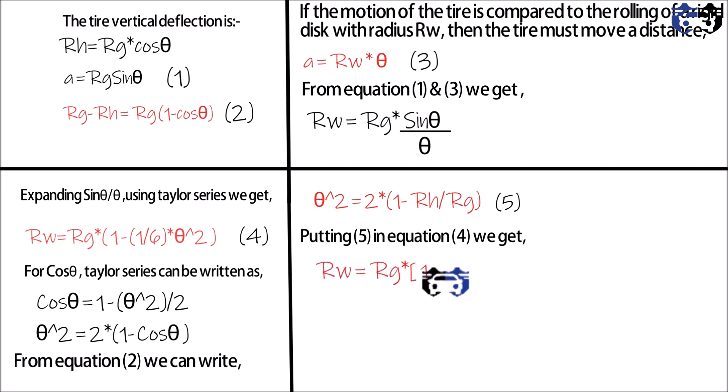So finally we get the rolling radius value which is Rw equals to Rg multiply by one minus one by three multiply by one minus Rh by Rg. So on solving this we get Rw equals to two by three multiply by Rg plus one by three multiply by Rh. So this is the value of rolling radius.